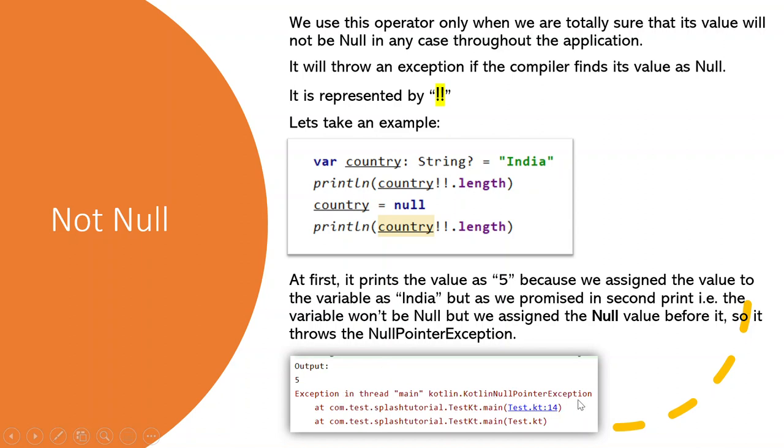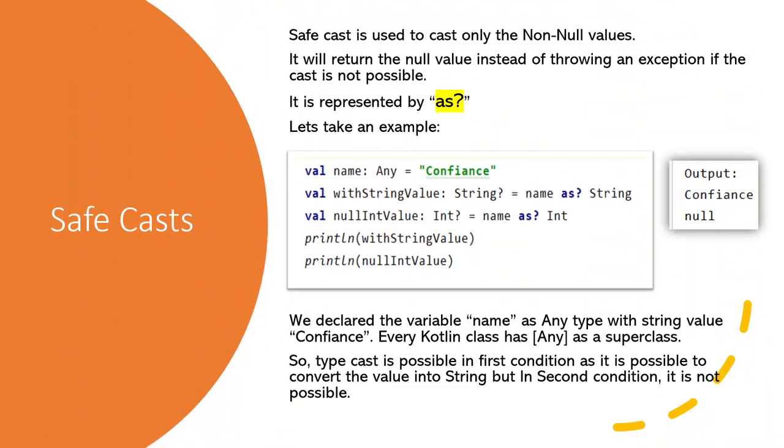Next is safe cast. It will only cast the value if it is not null, otherwise it returns the null values instead of throwing an exception. It is represented by as question mark.